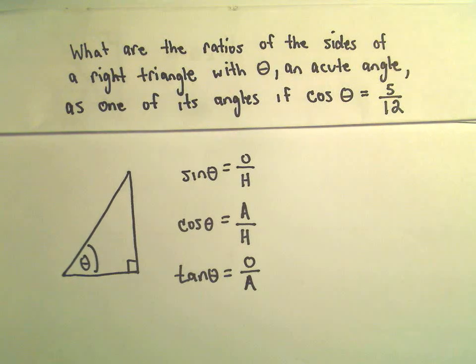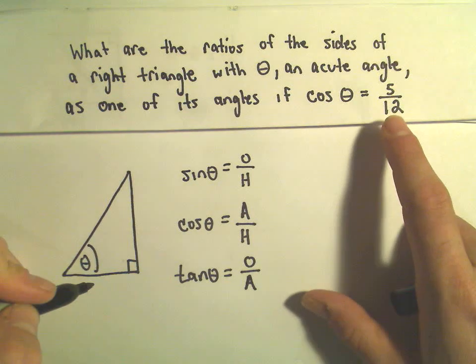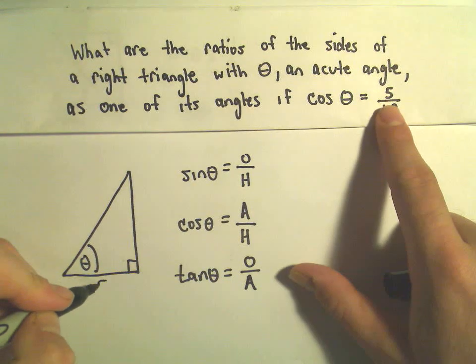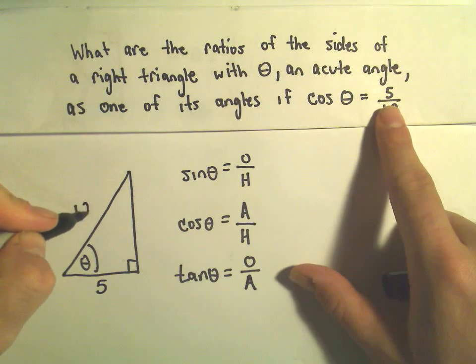Okay, so they give us that cosine of theta is 5 over 12. So I'm simply going to label the adjacent side with length 5 and the hypotenuse with length 12.